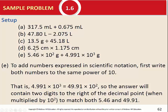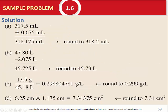For the multiplication problem: 6.25 cm × 1.175 cm. Centimeters times centimeters gives centimeters squared. 6.25 has 3 significant figures; 1.175 has 4 significant figures — round to 3. Multiplying out and rounding to 3 significant figures gives 7.34 cm².